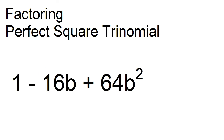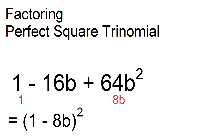Factor 1 minus 16b plus 64b squared. The positive square root of 1 is 1, and the positive square root of 64b squared is 8b. Therefore, 1 minus 16b plus 64b squared is equal to the square of the quantity 1 minus 8b.